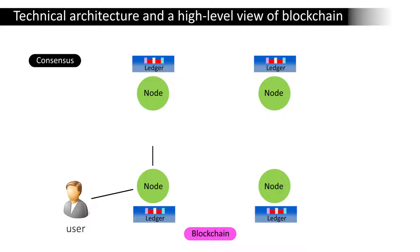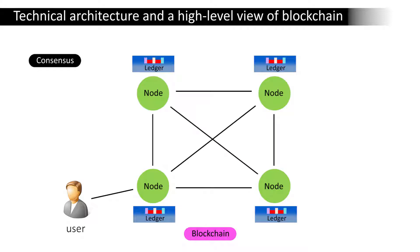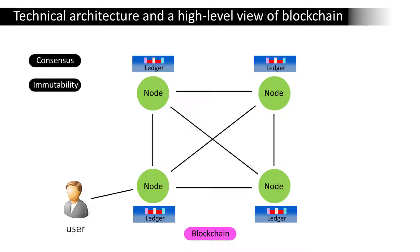Users send transaction requests to the blockchain to perform operations the chain is designed to provide. Once the transaction is completed, the record is added to one or more ledgers and can never be altered or removed. This property of the blockchain, known as immutability, is the most important of all its properties.